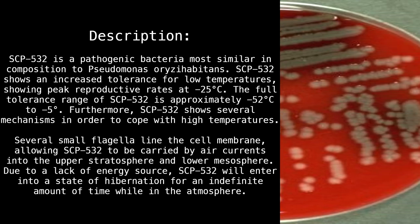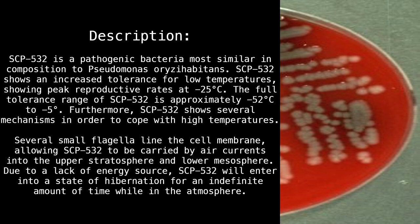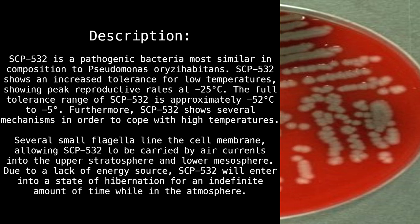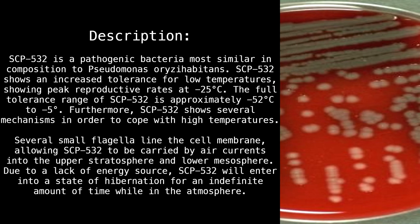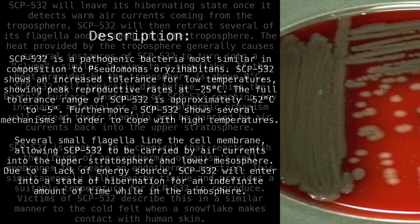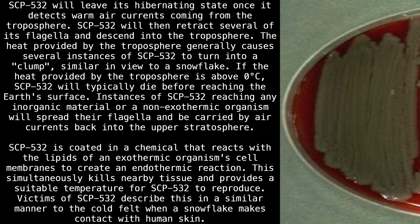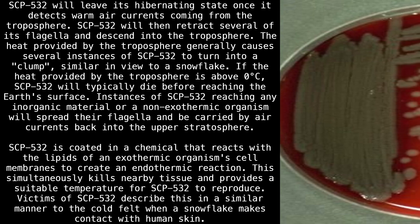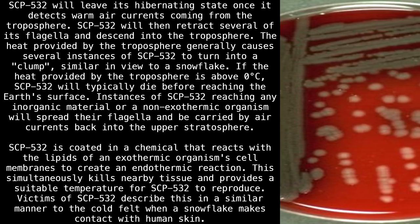Furthermore, SCP-532 shows several mechanisms in order to cope with high temperatures. Several small flagella line the cell membrane, allowing SCP-532 to be carried by air currents into the upper stratosphere and lower mesosphere. Due to a lack of energy source, SCP-532 will enter into a state of hibernation for an indefinite amount of time while in the atmosphere. SCP-532 will leave its hibernating state once it detects warm air currents coming from the troposphere, then retract several of its flagella and descend.